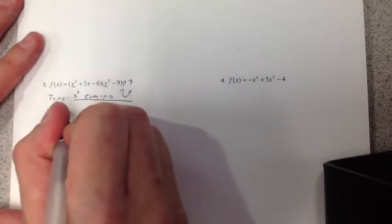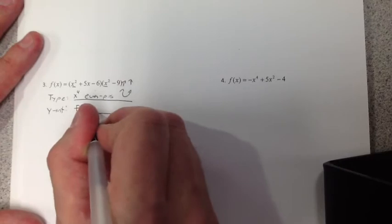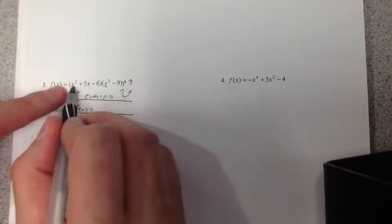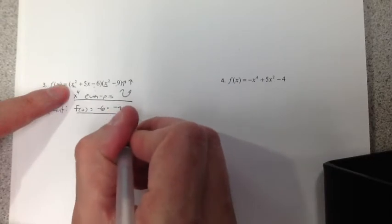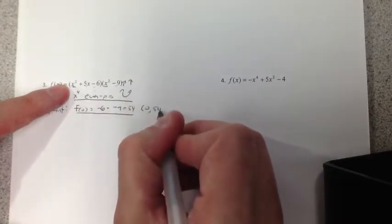We're about the roots of the second. Get the y-intercept. The y-intercept is easier to do at this point. F(0). If I let 0, we get 0, 0. That's negative 6 times 0, negative 9. We get 54. So we get (0, 54).